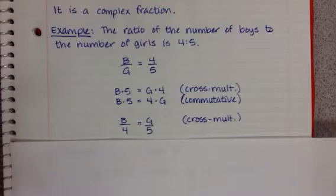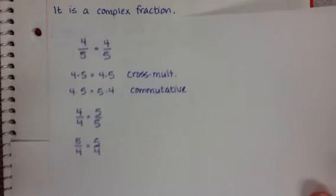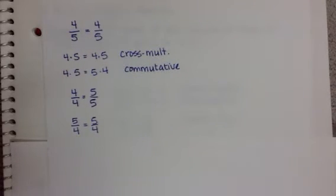Now, if that doesn't make a whole lot of sense, let's use actual numbers to show what is happening. So let's start again and let's just say it's 4 to 5 is equal to 4 to 5. That's basically what we were saying, boys to girls is 4 to 5, so they are the same. So if we use cross multiplication, we get 4 times 5 equals 4 times 5.